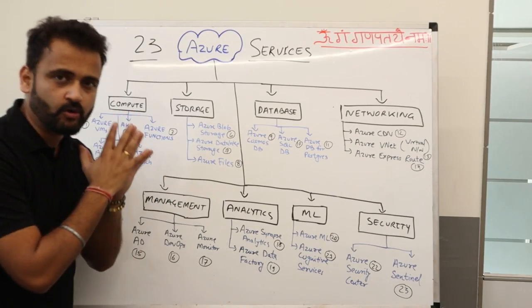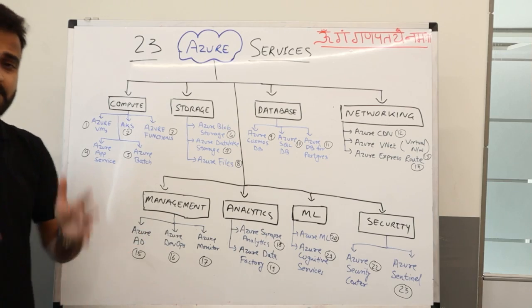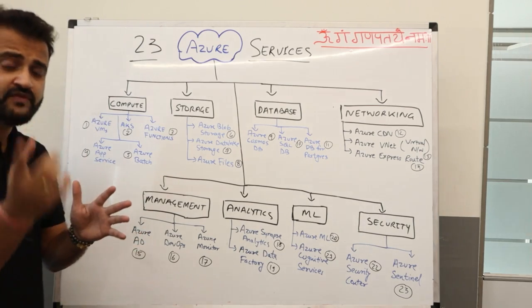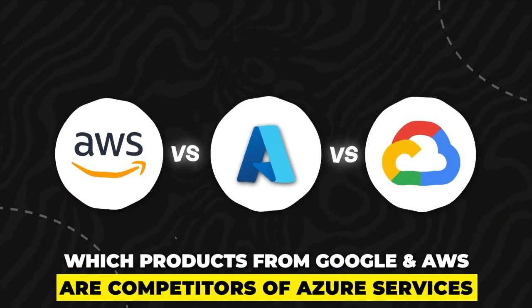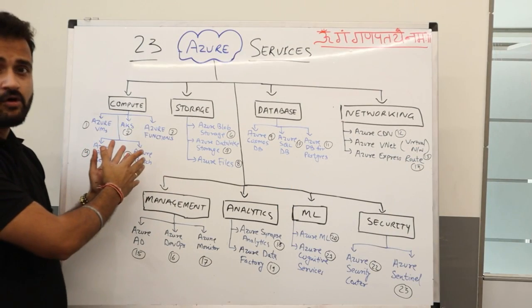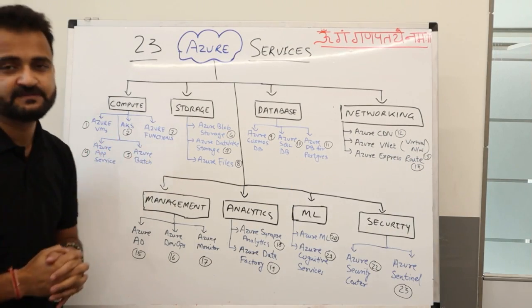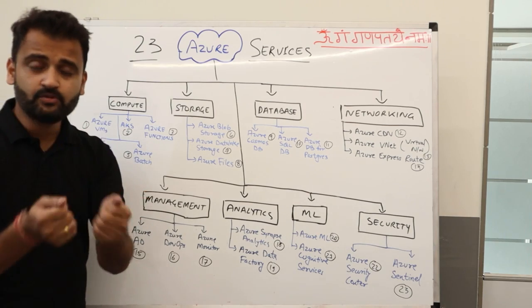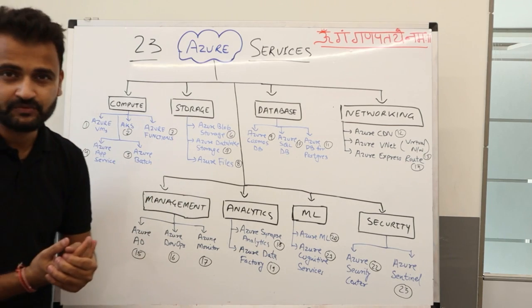We'll talk about these 23 services, and the good thing is we will also understand which particular product or service from Google and AWS are the counterparts or competitors of these Azure services, so you can draw parallels if you are working on Google Cloud or AWS. So without further ado let's understand very quickly what these particular services do.